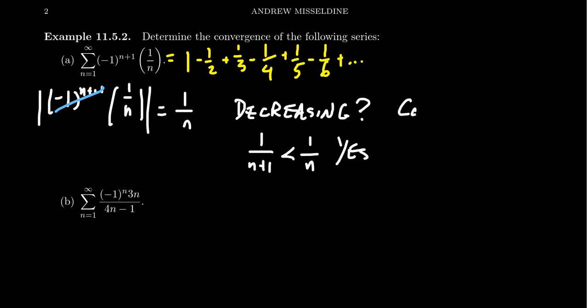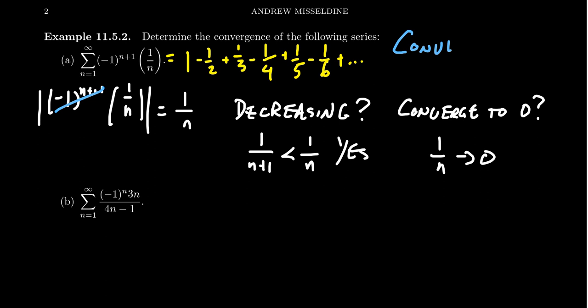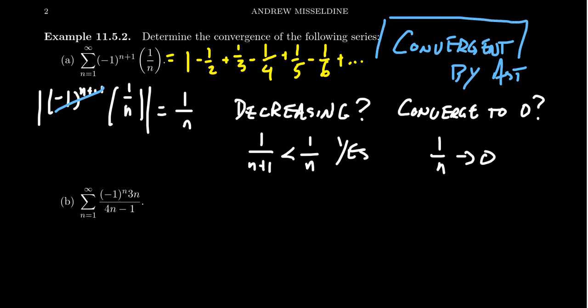Does it converge to zero? Yes — the sequence 1 over n will approach 0. So by the alternating series test (AST), this is a convergent series. We have just two simple checks to show that the alternating harmonic series is convergent, even though the harmonic series itself is divergent. The alternating factor actually helps.